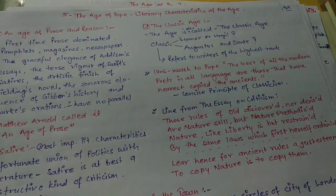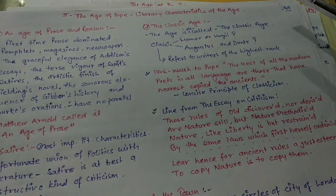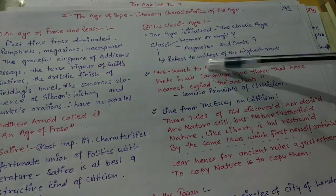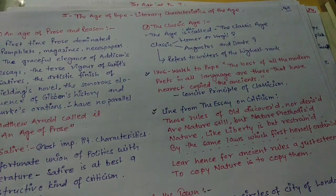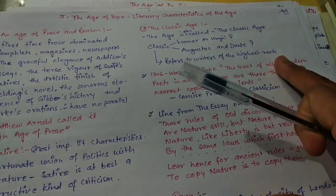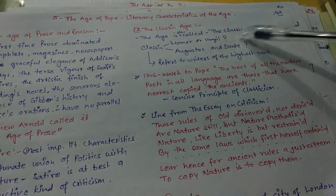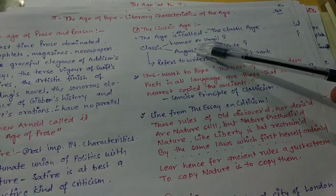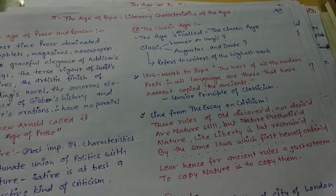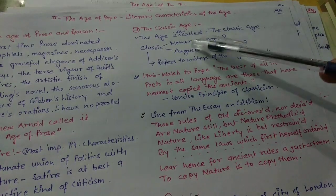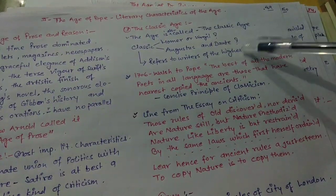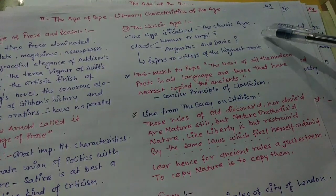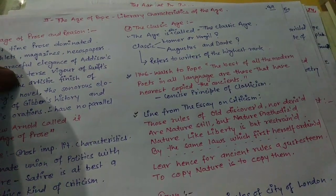This age is also called the Classic Age. In English literature, on one side are the Classics and on the other are the Romantics. Classics are people who usually stick to rules. The Age is called the Classic Age because all the writers kept in mind classic authors — Homer, Virgil, Augustus, and Dante — and tried to copy them or maintain a standard in writing by following these writers.